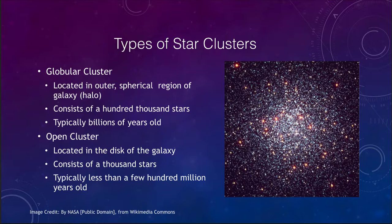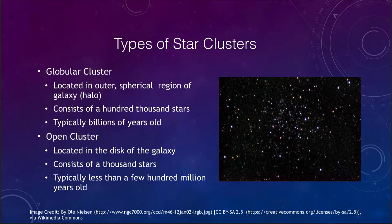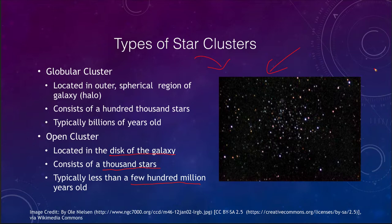There are also much younger clusters called open clusters. By comparison, open clusters are located in the disk — the flattened portion of our galaxy. They may contain only several thousands of stars and are typically less than a few hundred million years old. They are much more spread out than globular clusters, with fewer stars. An open cluster will eventually dissipate into space, whereas a globular cluster has enough mass to remain gravitationally bound for billions of years.